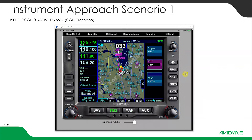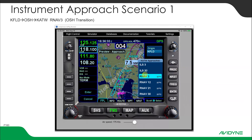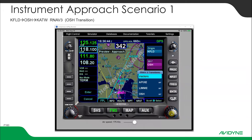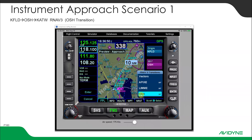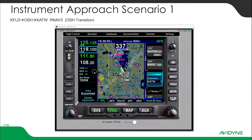Let's hit the PROC button so we can load the approach. The RNAV3 — I can scroll down by turning the knob, or I just reach up and touch RNAV3. You can see a preview of it. I hit enter, or push in on the FMS button. It's the OSH transition, so I select OSH by touching that and hitting the button. Now our approach is loaded and it's all in view.